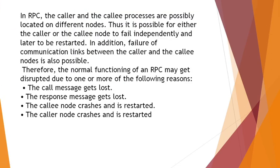Moving to today's topic, the first one is call semantics. In RPC, the caller and the callee process are on different nodes. It might be possible for either the caller or the callee node to fail independently and later to be restarted. Whenever any one of the nodes fails, we need to restart the procedure. In addition to failure of these nodes, there will also be a failure of communication links. In such a case, how the RPC is going to execute the procedure is discussed here.